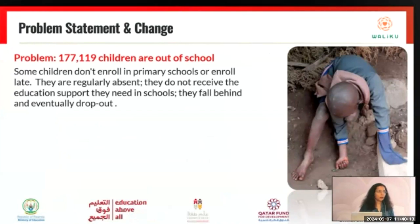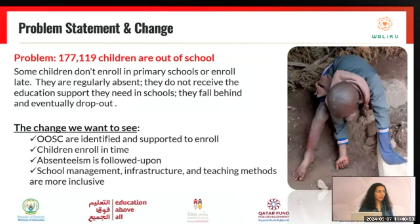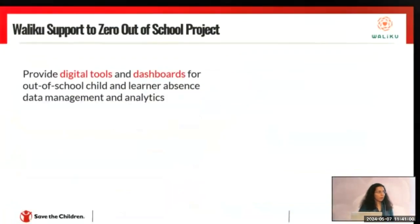We know the problem around these children is that many of them don't enroll, or even if they enroll, they drop out due to various personal and environmental reasons. The change we want to bring about is first to identify them through a nationwide identification process, enroll them, and see that every year all children are enrolled on time. We then want to track the absences — not just of out-of-school children but of all learners — and have an early warning system for schools to identify any child who is chronically absent so they can take relevant action and see that they return to school.